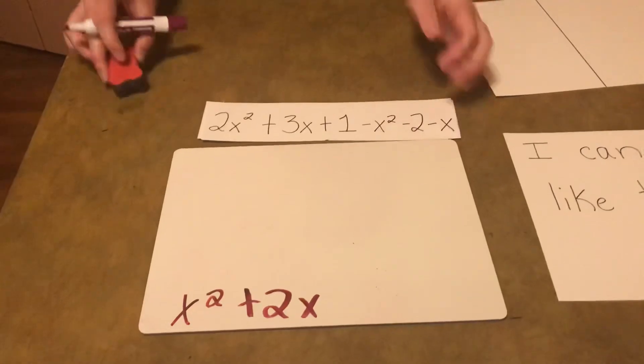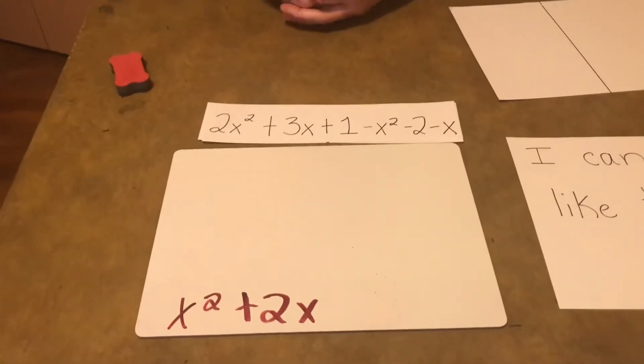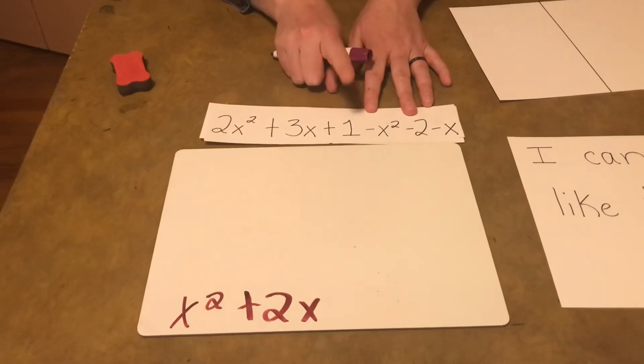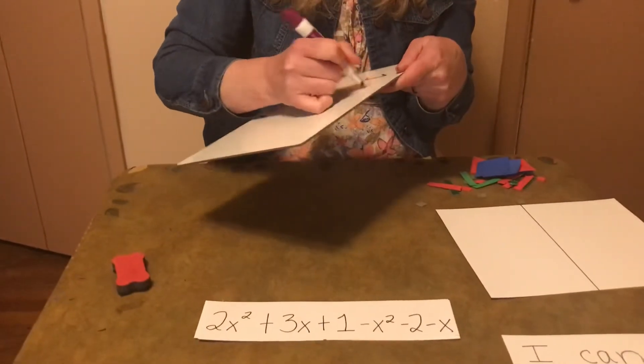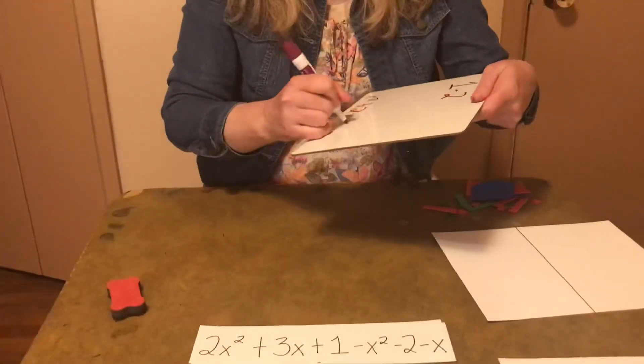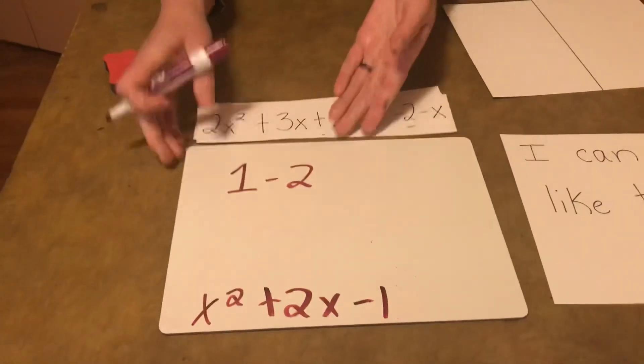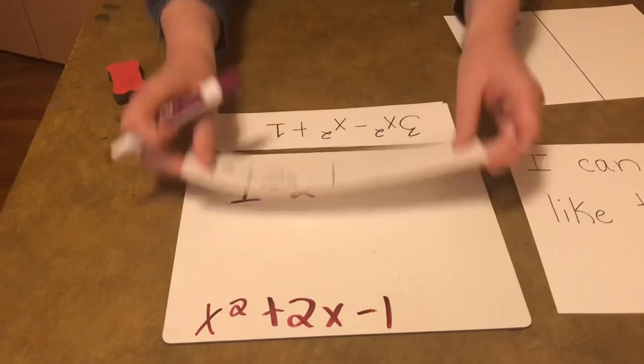We have the easiest part left. We just have our numbers, and we've been working with those since kindergarten. So we got this. So we have 1, a positive 1, and a negative 2. So we're going to do 1 minus 2. And we've done a lot of this lately that we know 1 minus 2 is a negative 1. So X² plus 2X minus 1. Let's see. We did it.